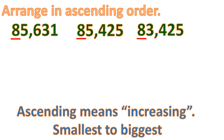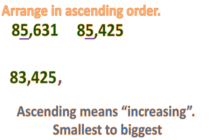So after that, since we don't know which one is the smallest, we will go to the next place value, the 1,000th place. So let's compare: we have two 5s and a 3. So obviously, the one with the smallest value is the one with the smallest digit, which is 3. So this means the smallest number among these three is 83,425.